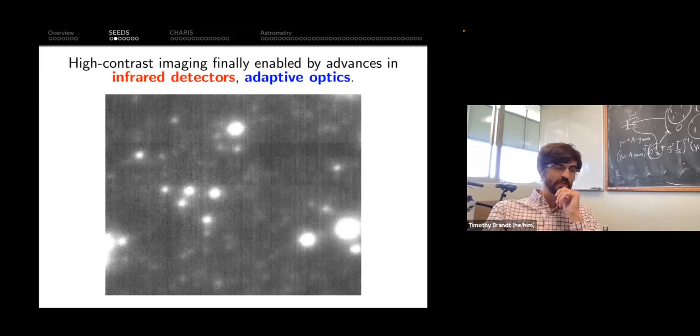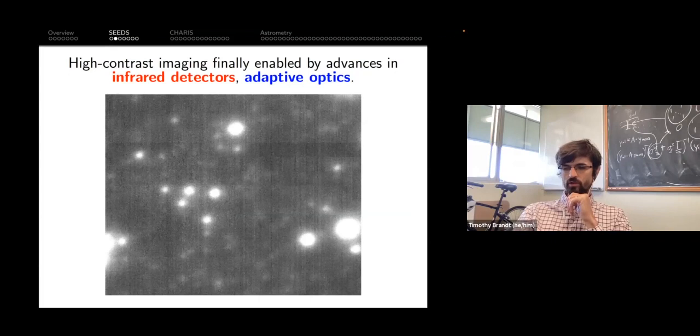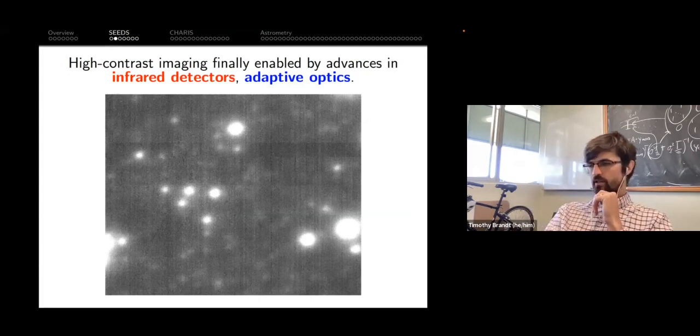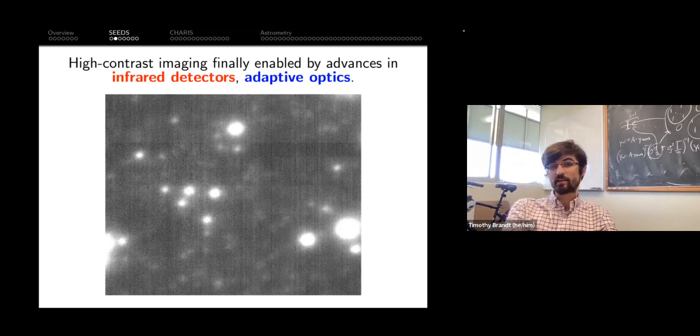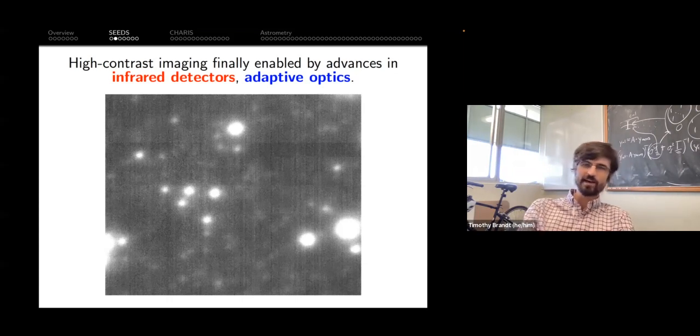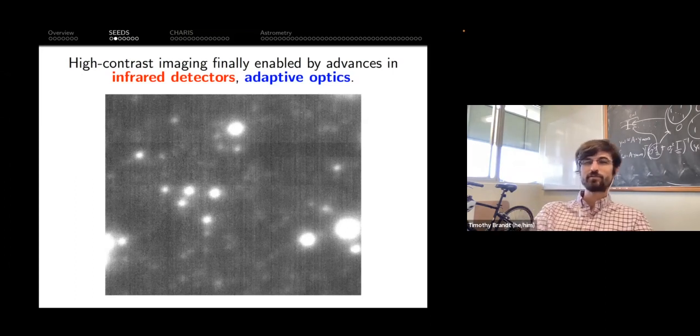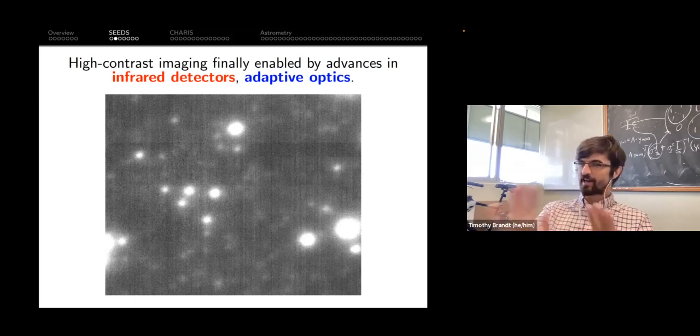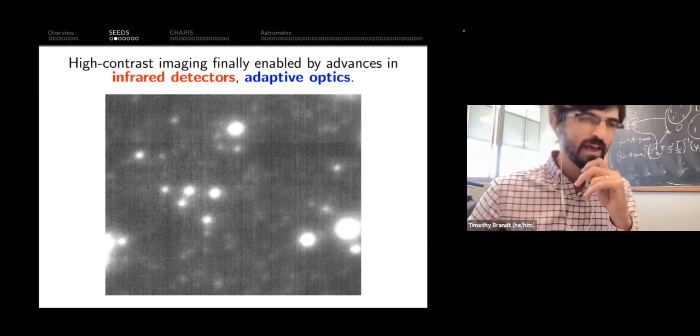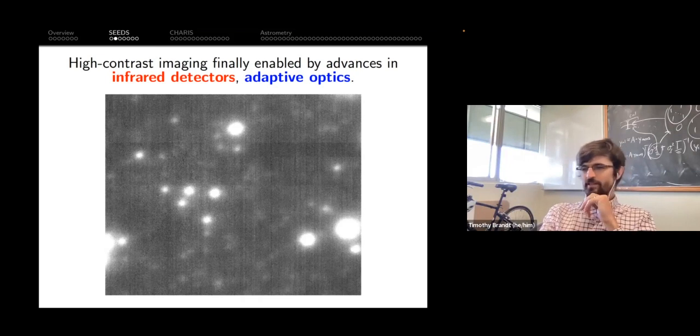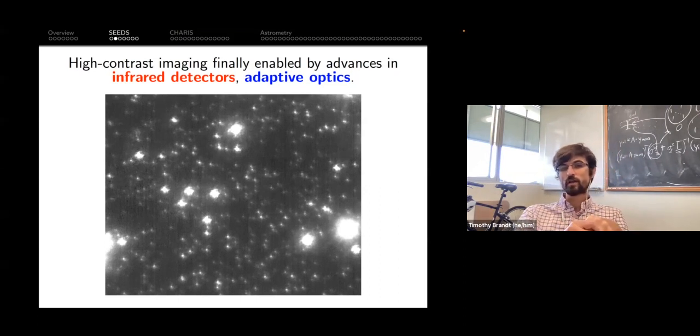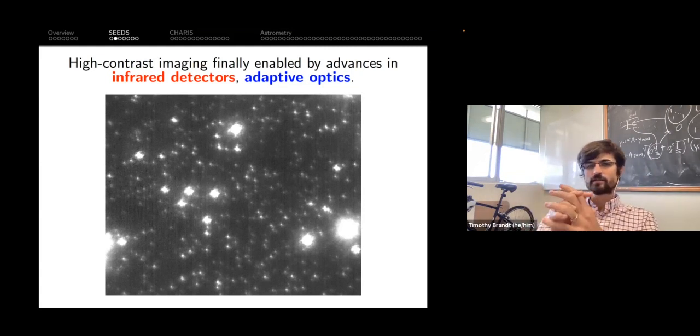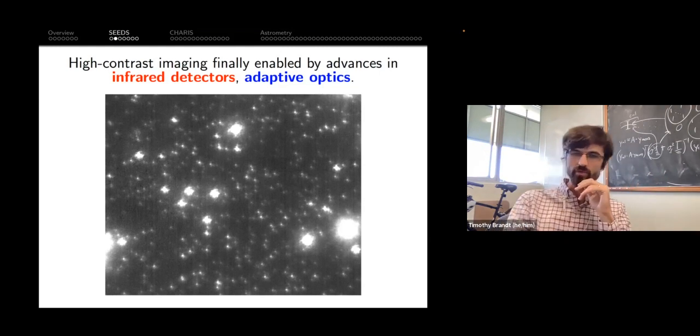In order to pull that off, we needed to take advantage of new technological developments. The two most important ones are adaptive optics and infrared detectors. This image shows you both - an infrared detector with an image of the core of a globular cluster taken under natural seeing conditions. If you turn your adaptive optics system on, suddenly things look much sharper. When you can concentrate their light, the bright things reveal their faint companions.